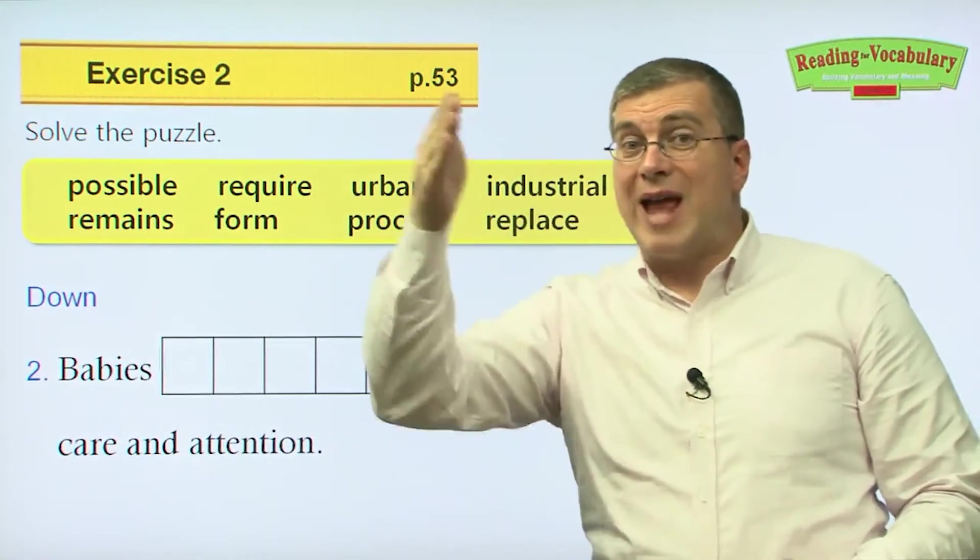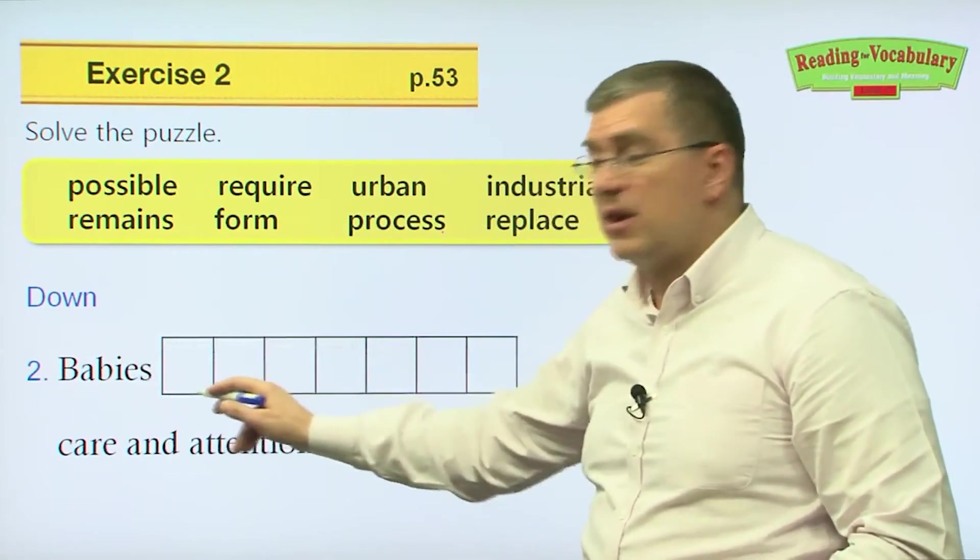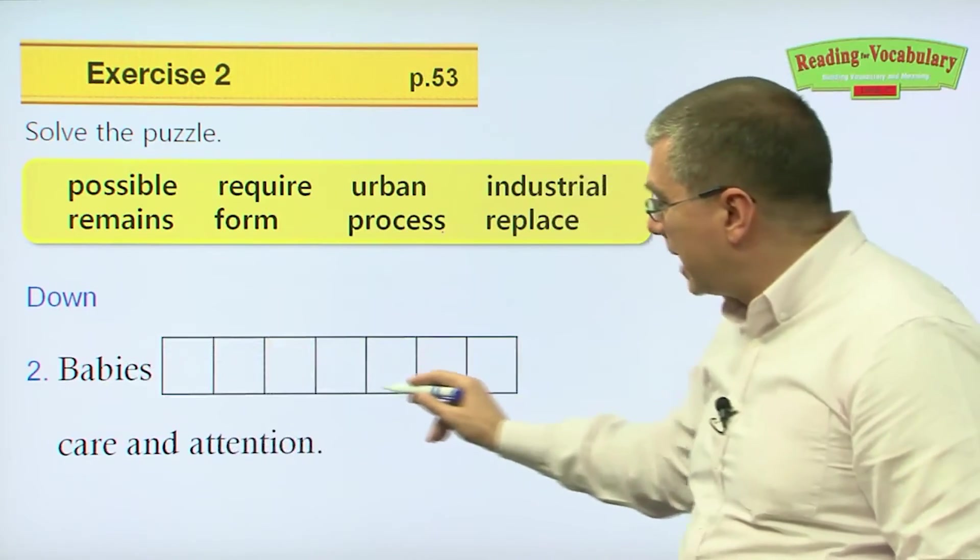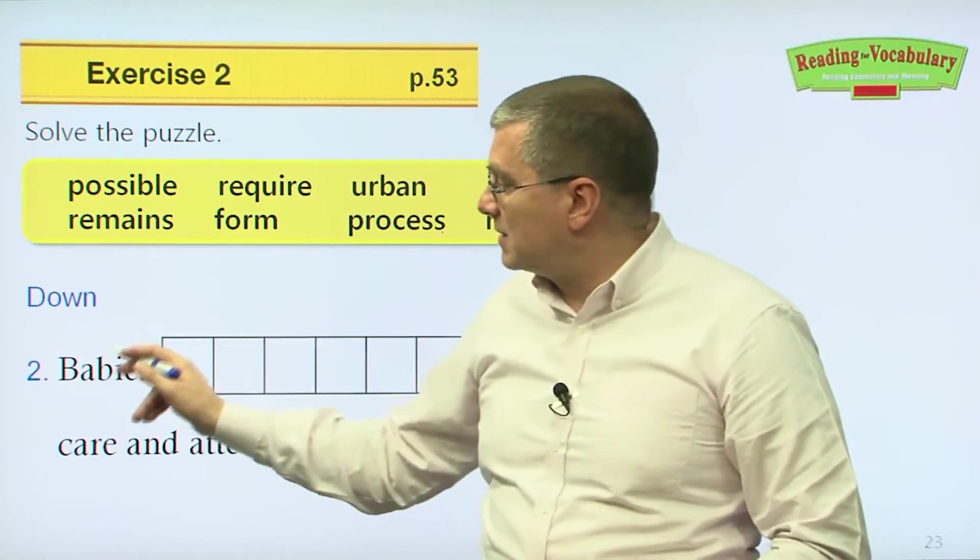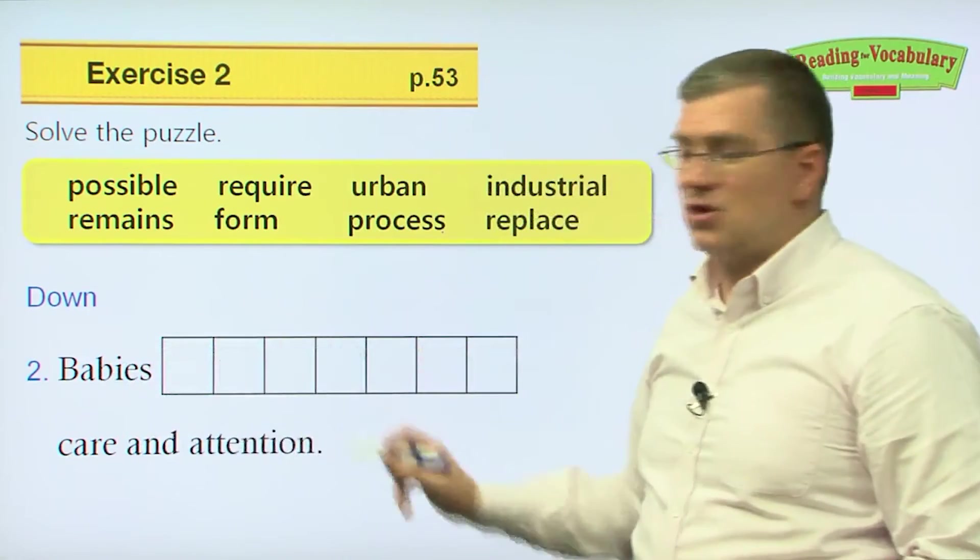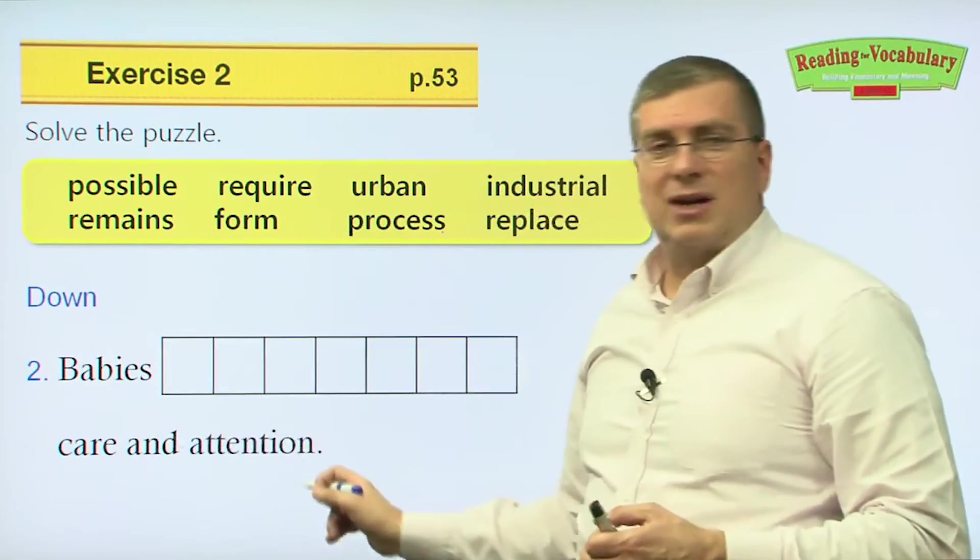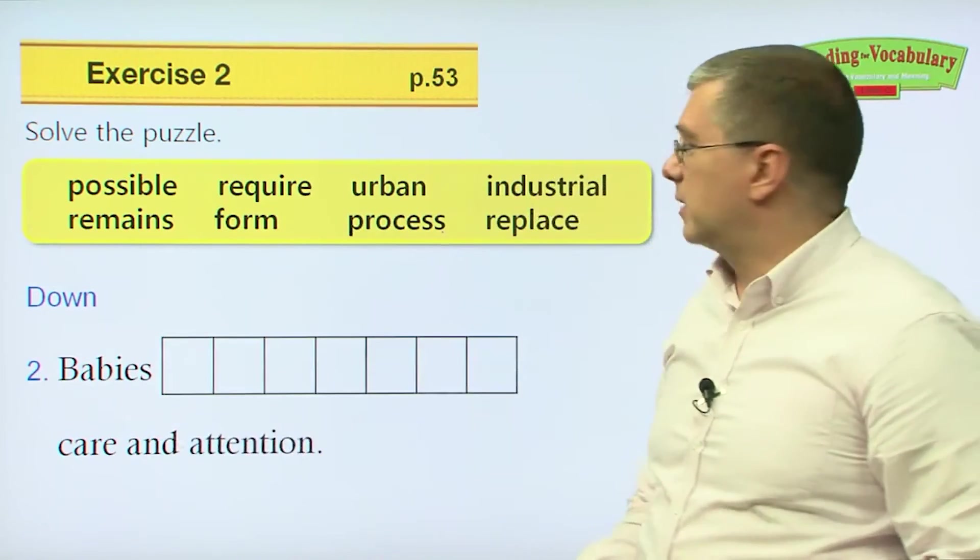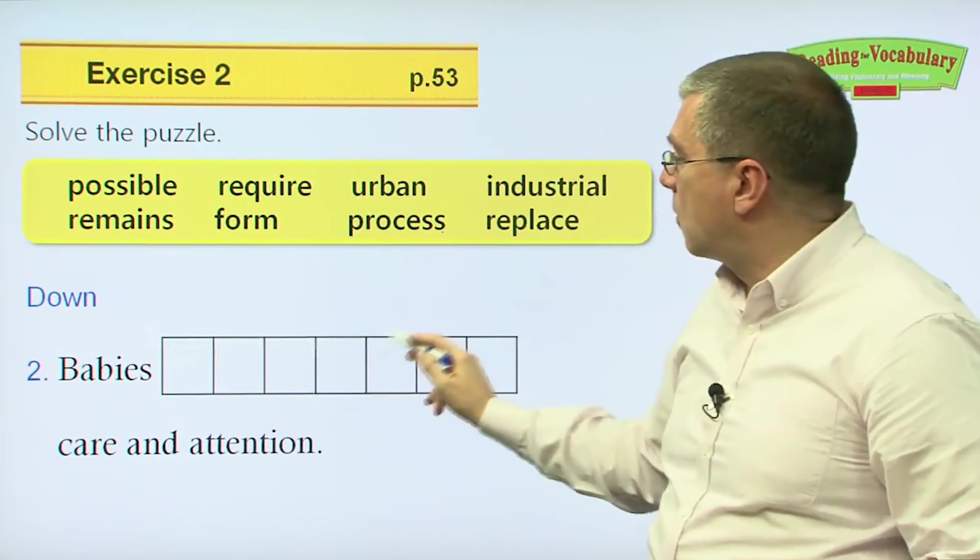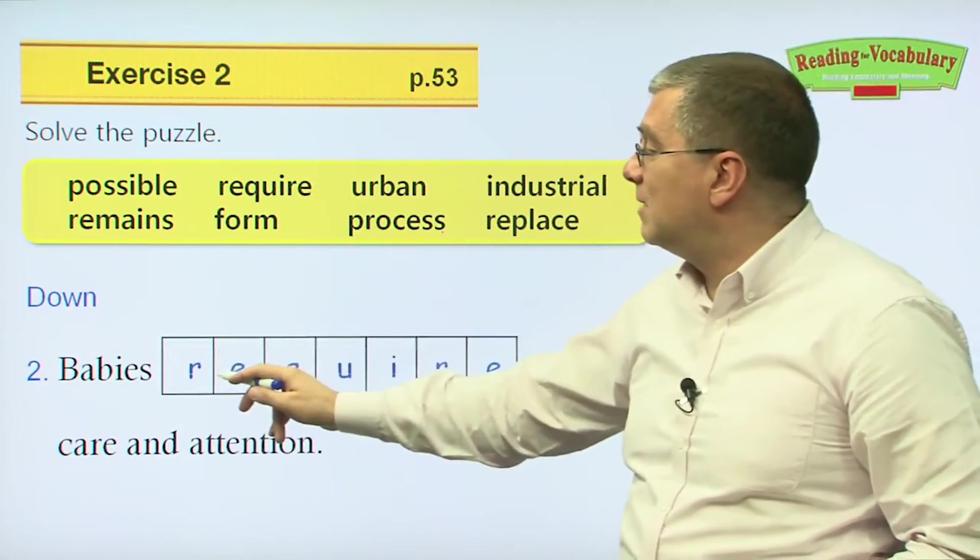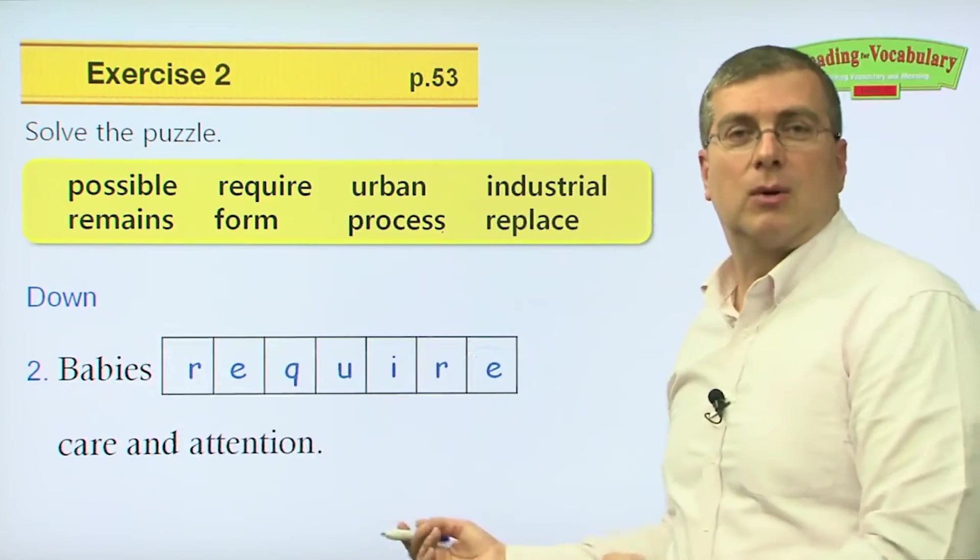Now, we're looking at the words that go down in the puzzle. The words that go down, the clues are part of a sentence. It's like filling in the blank, except in this case, the blank is the box. The boxes for each letter of the word. What word makes sense in this sentence? Babies need care and attention. What's another word for need that we talked about? Would it be require? One, two, three, four, five, six, seven. One, two, three, four, five, six, seven. Aha, that fits. And it makes sense. Babies require care and attention. That's true. So that's the correct answer.